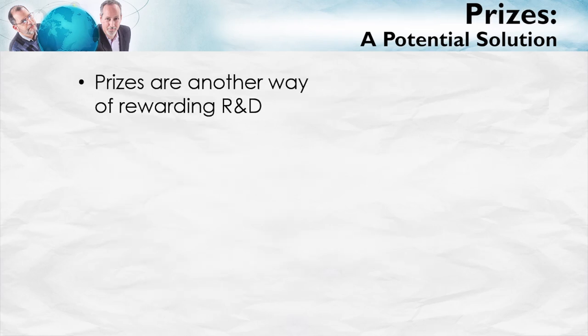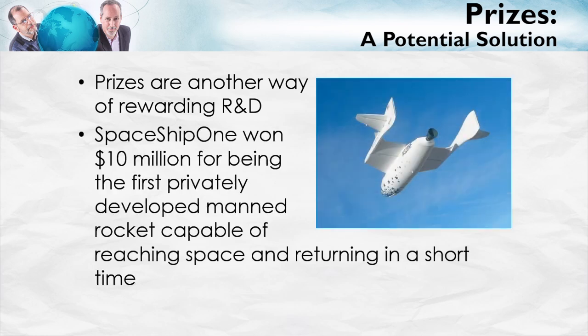Prizes are another way of navigating the trade-off. As with patent buyouts, the idea is that a firm is offered upfront its R&D costs, but the government only pays the firm if it achieves a certain goal, and if that goal is achieved, the technology goes into the public domain and can be used by anyone. SpaceShip One, for example, won $10 million for being the first privately developed manned rocket capable of reaching space and returning in a short period of time. Prizes are being used more often — the government set up a prize for better light bulbs, for example, and that worked quite well.